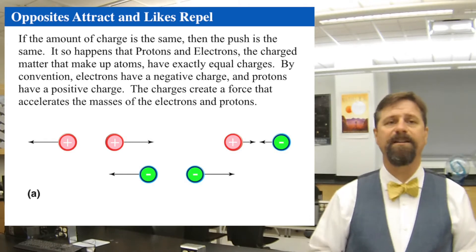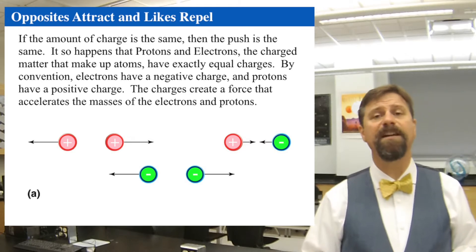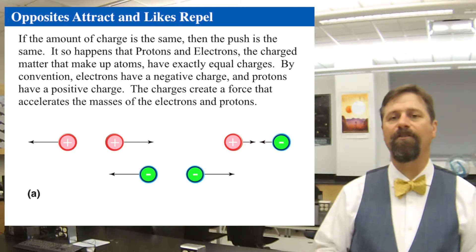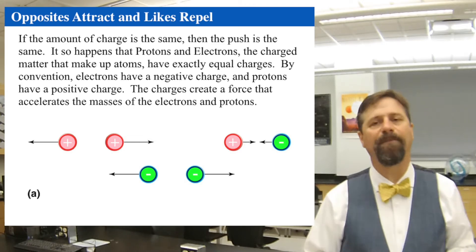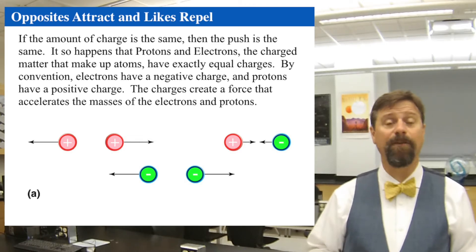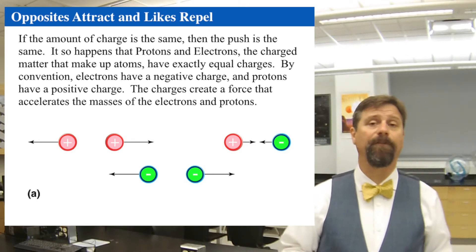So plus charges repel against plus charges and minus charges repel against minus charges. Protons have a plus charge. Electrons have a negative charge. They have exactly the same amount of charge, just opposite and equal magnitude. The electron has a much smaller mass, the proton has a much larger mass, so the proton tends to stay still where the electron tends to whizz about.